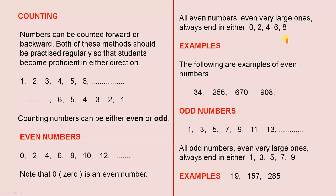All even numbers, even very large ones, always end in either 0, 2, 4, 6, or 8. The following are examples of even numbers: 34, 256, 670, 908. Notice they all end in 4, 6, 0, 8. That's why they're all even.